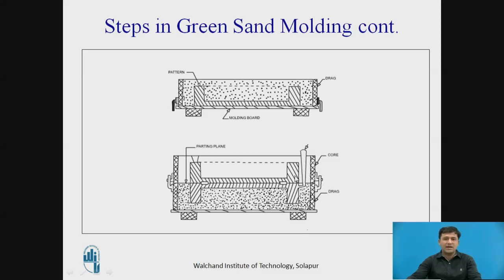In green sand moulding, the pattern is placed, sand is rammed around it in the cope half, and similarly in the drag half. The sand is called green because of its moisture content — it is not green in colour. As the grains come closer due to ramming, the sand develops strength. The cope part is then placed above the drag part.